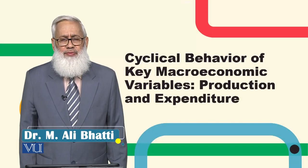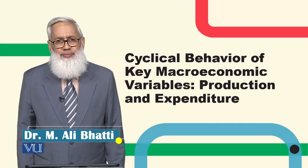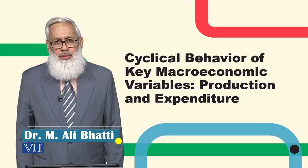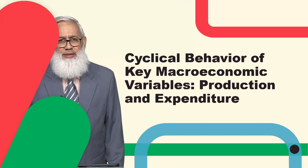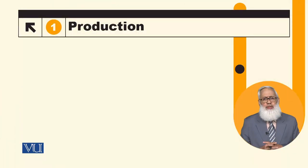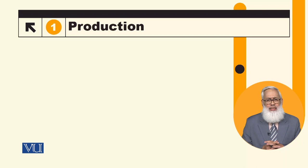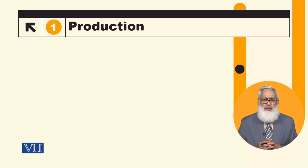Dear students, this module covers the cyclical behavior of key macroeconomic variables — production and expenditure. In the last module, we discussed common features regarding the qualitative behavior of macroeconomic variables during a business cycle.